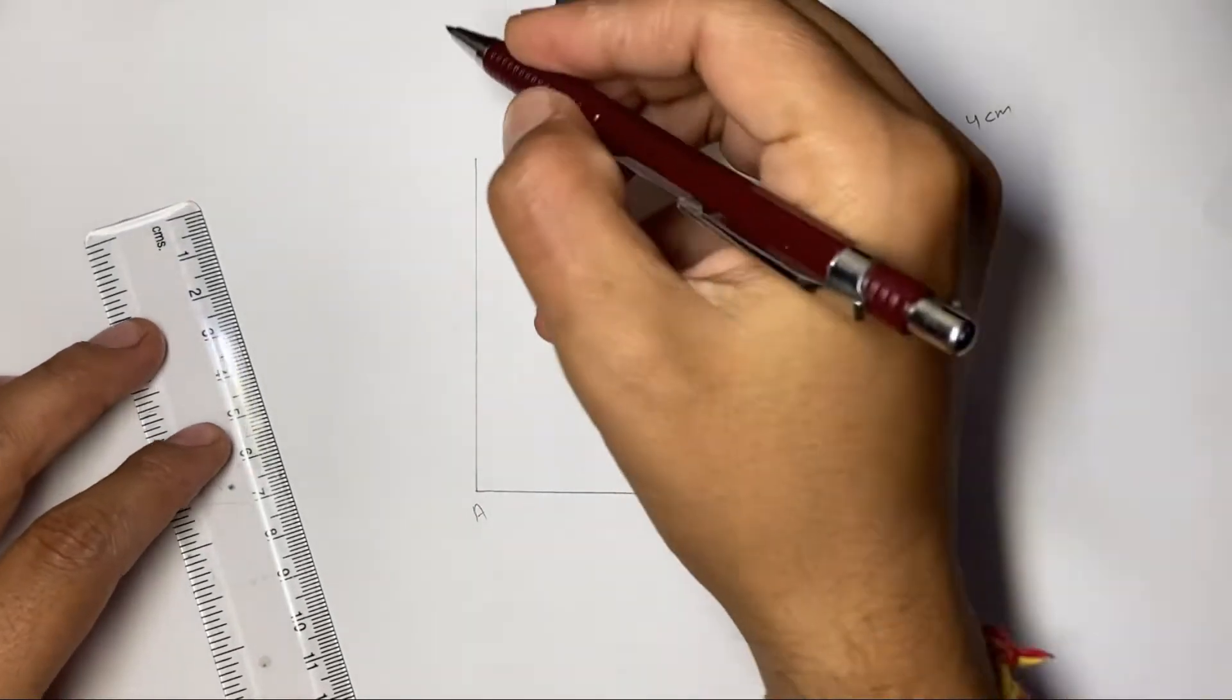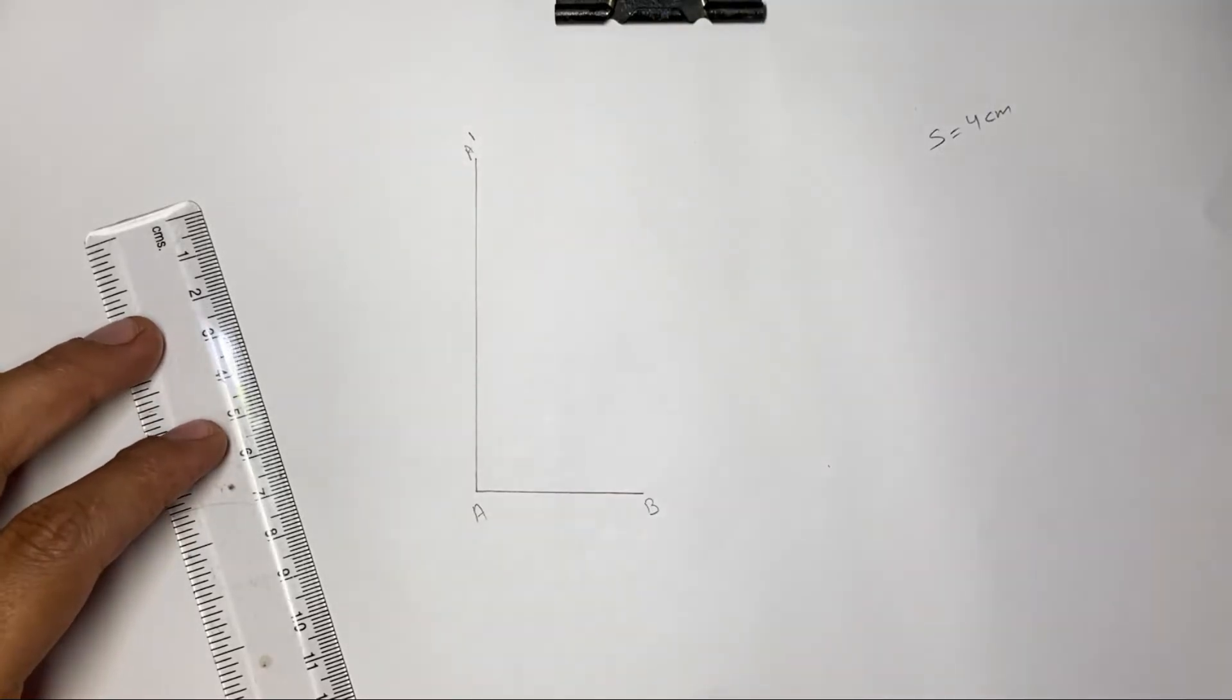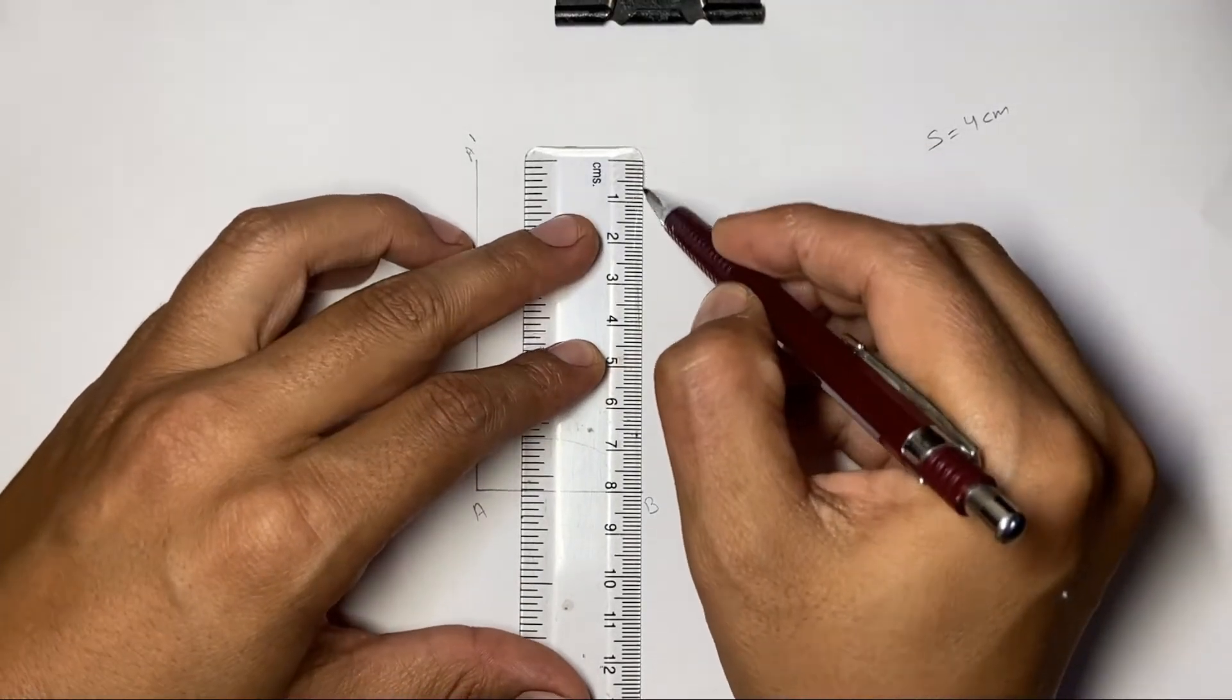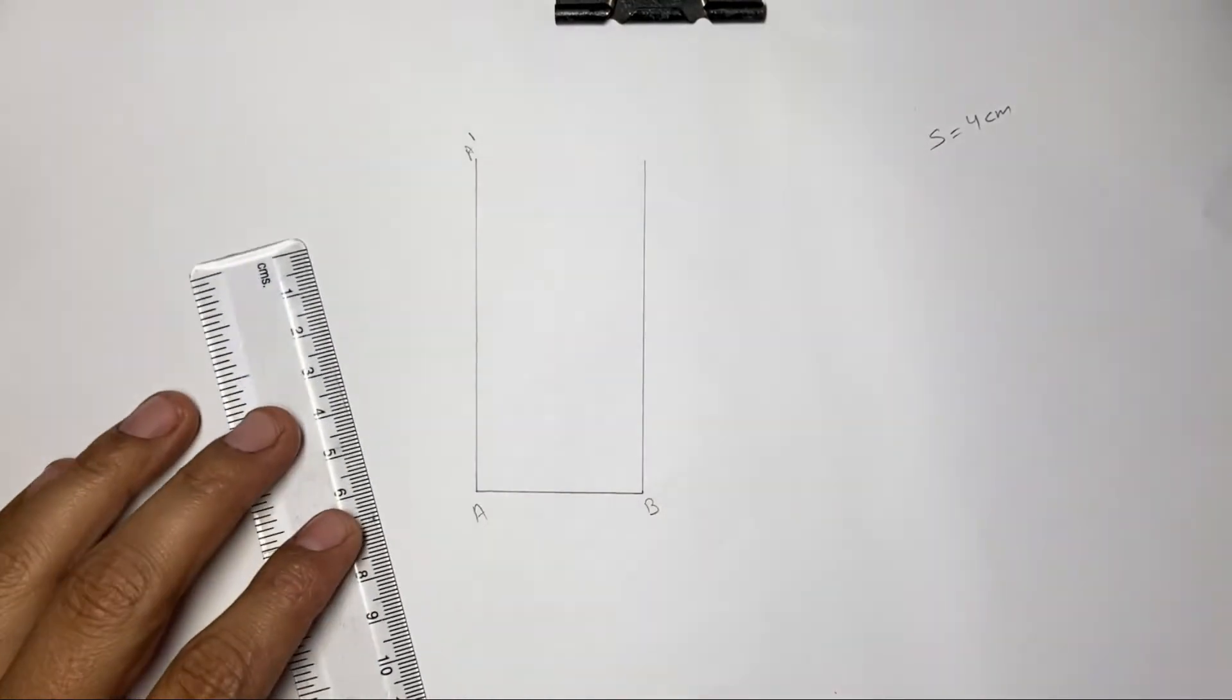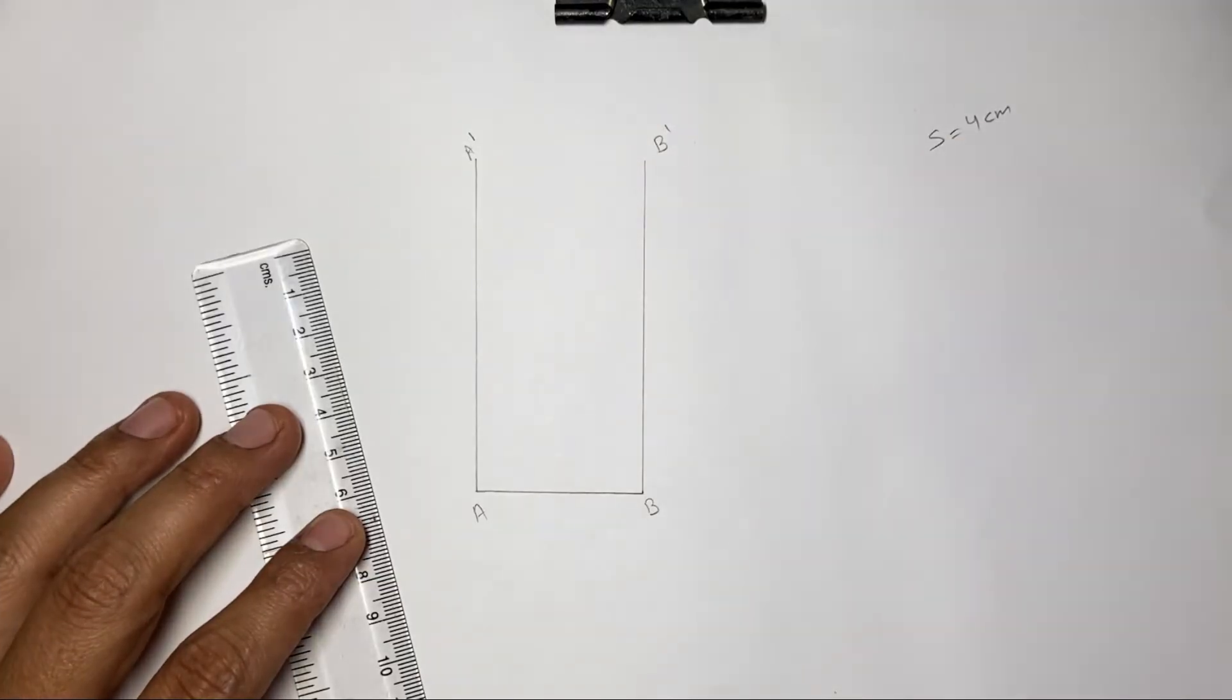Let us name it A dash. Now do the same thing from point B. Let us name it B dash.